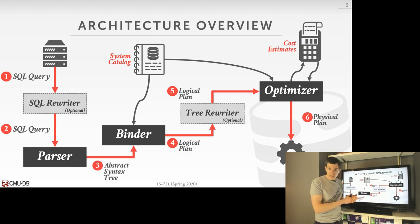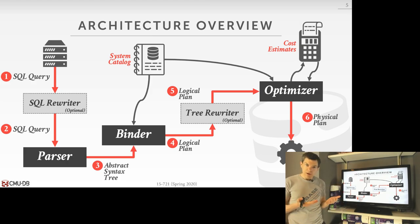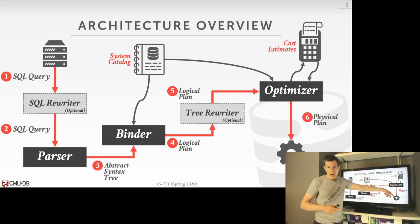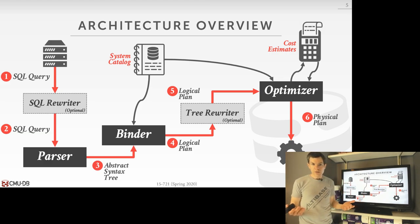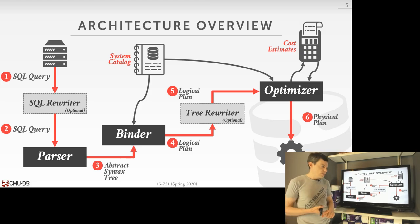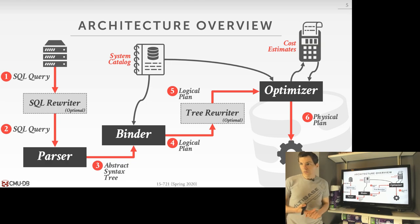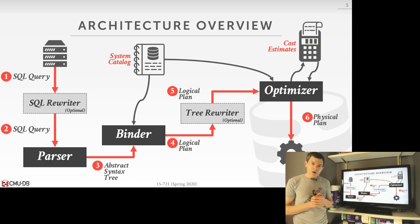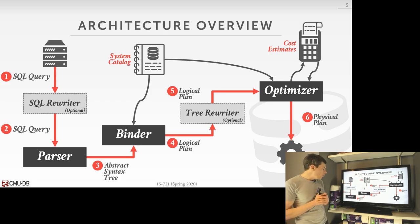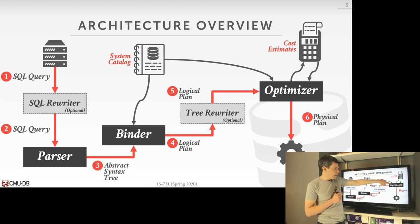The optimizer enumerates a bunch of different options and chooses the one plan with the lowest estimated cost. Once the optimizer is done, it spits out a physical plan that we go and execute. In our system, we use code generation to convert it into a domain-specific language that we compile into machine code. Other systems can take the physical plan and start interpreting and executing it right away.